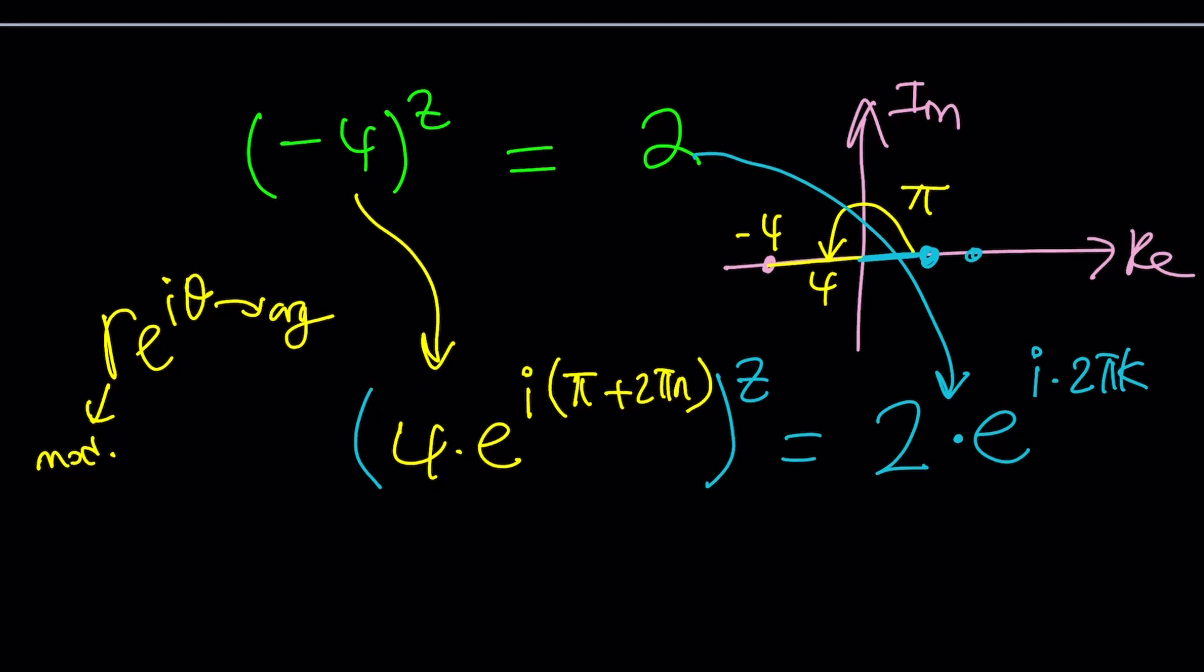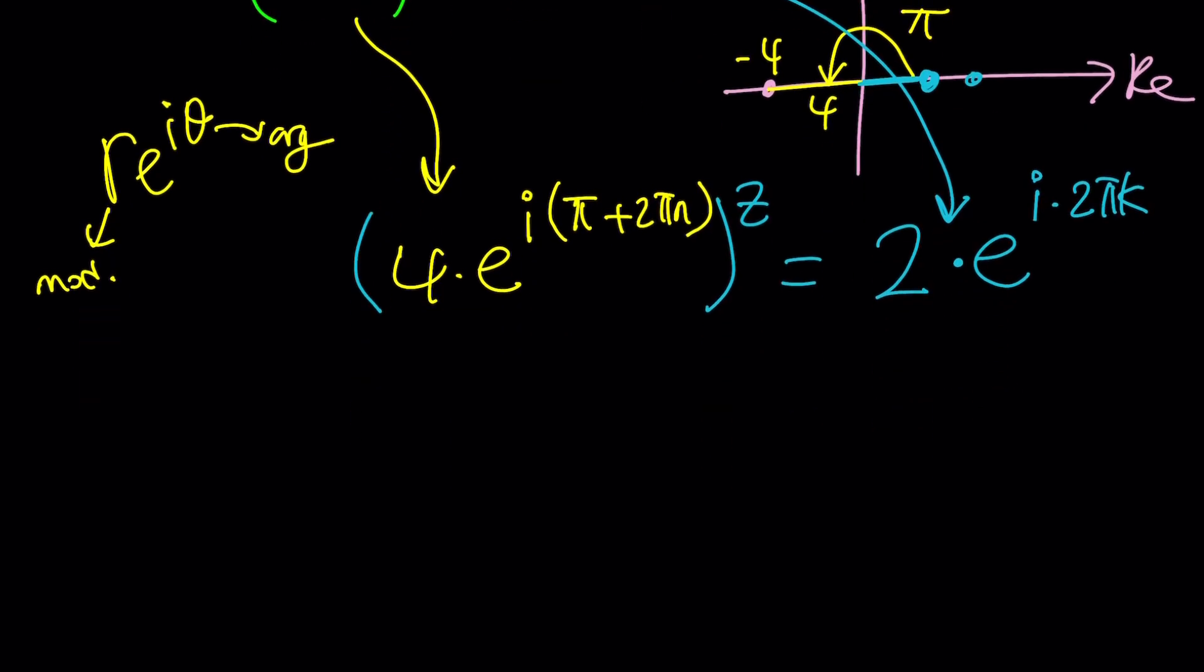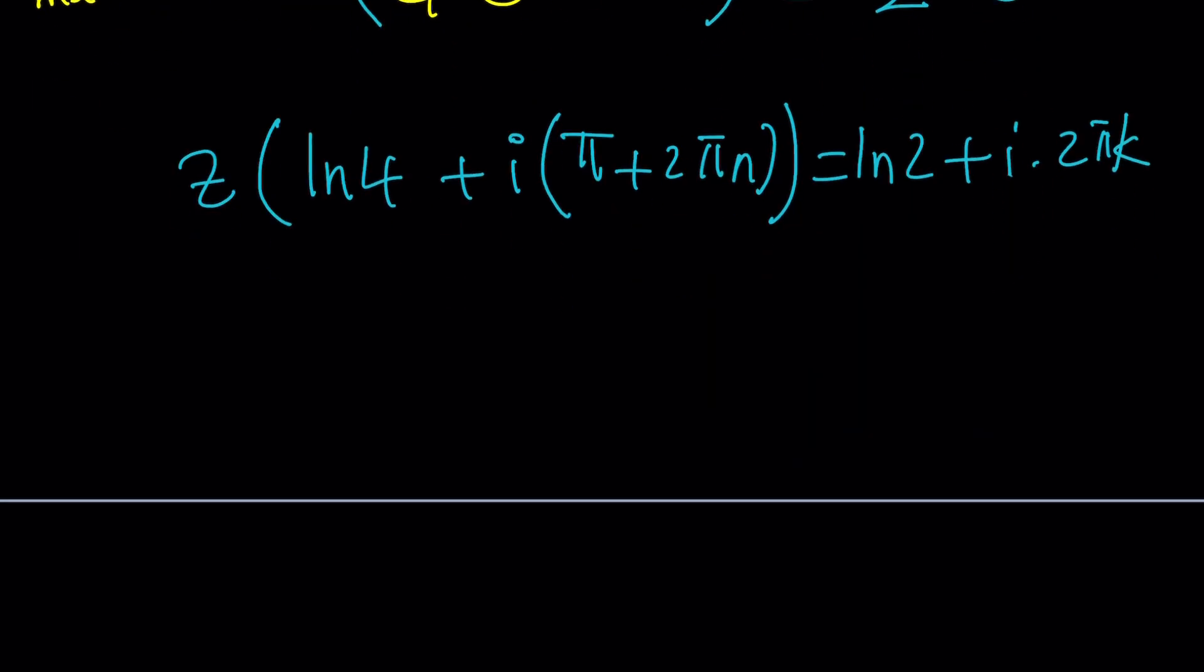So I can write 2 as 2 times e to the power i times 2 pi k. k is another integer. N and k do not have to be the same. They can be the same, but they don't have to be. Now, let's go ahead and see what we can do with this. Obviously, we have a power that is applied to a product. We can distribute it or bring z down, not get rid of it because we want to solve for z.